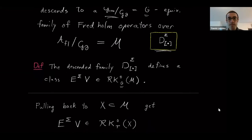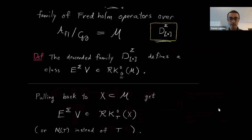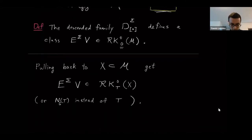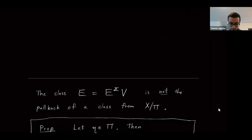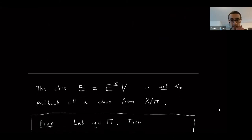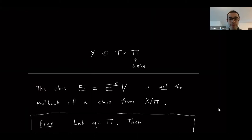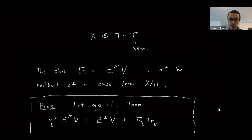We have this submanifold X in M, so we can take the pullback of this K-theory class to X — it's actually equivariant for the whole normalizer of the torus, not just the torus. An important point: if you remember, X had an action of T times Pi, where Pi is a lattice. This K-theory class turns out to not be equivariant for the lattice — it's certainly not the pullback of a K-theory class on the quotient X mod Pi. There is, however, a nice formula for what happens when you pull back this class by an element of the lattice.